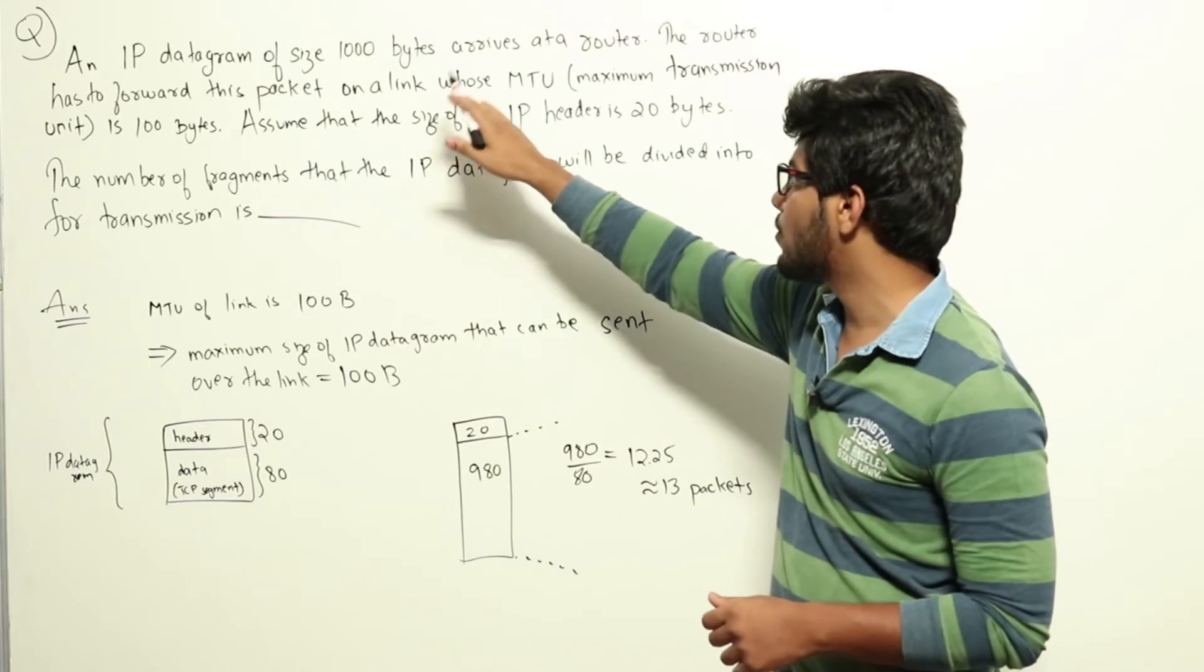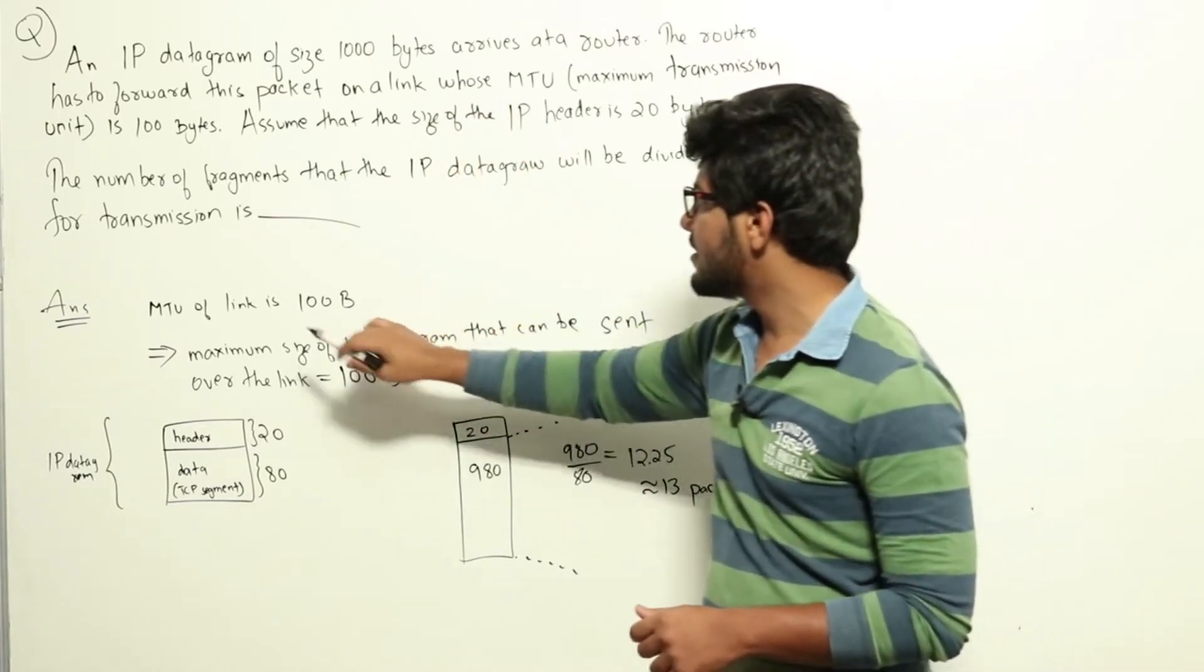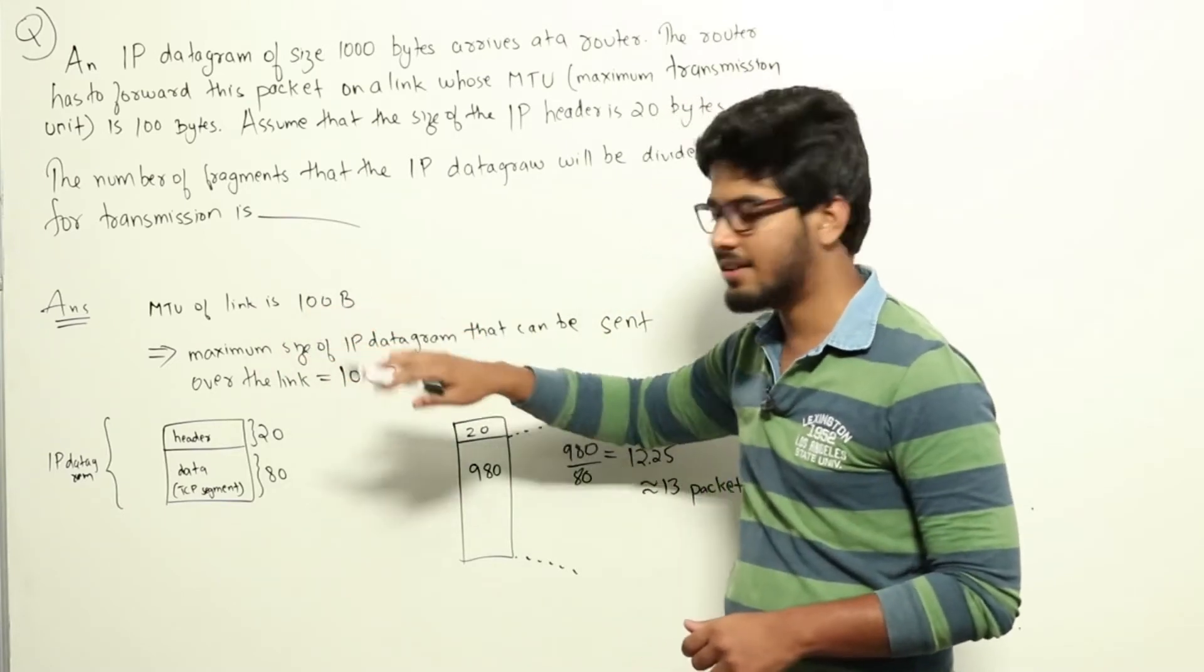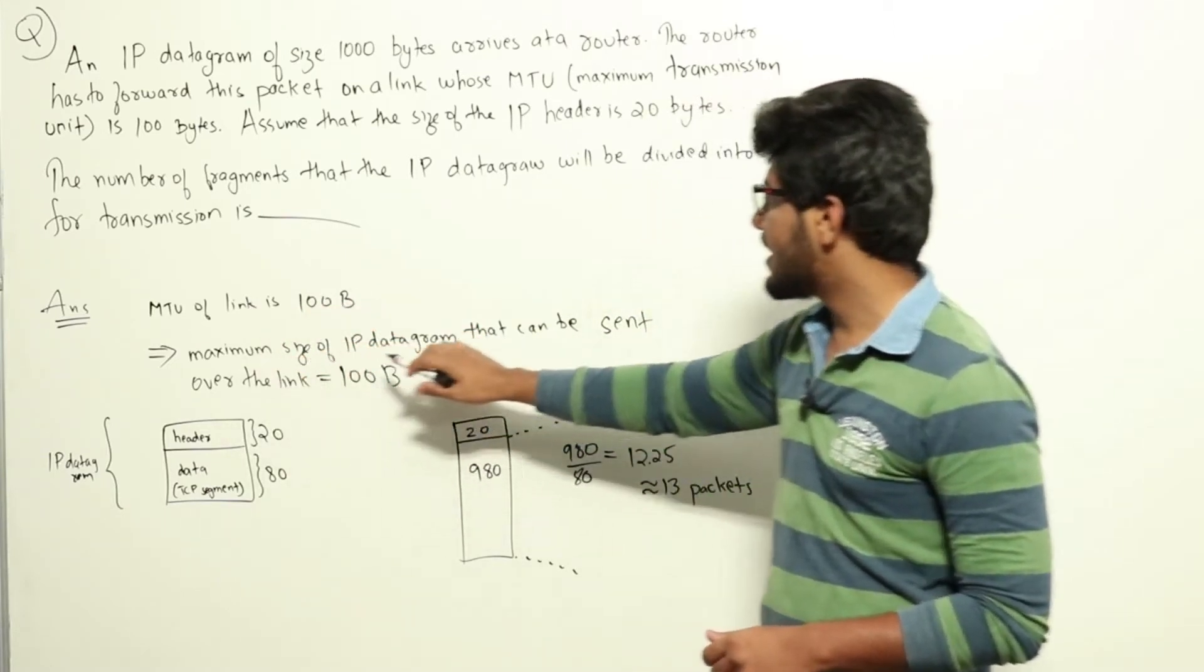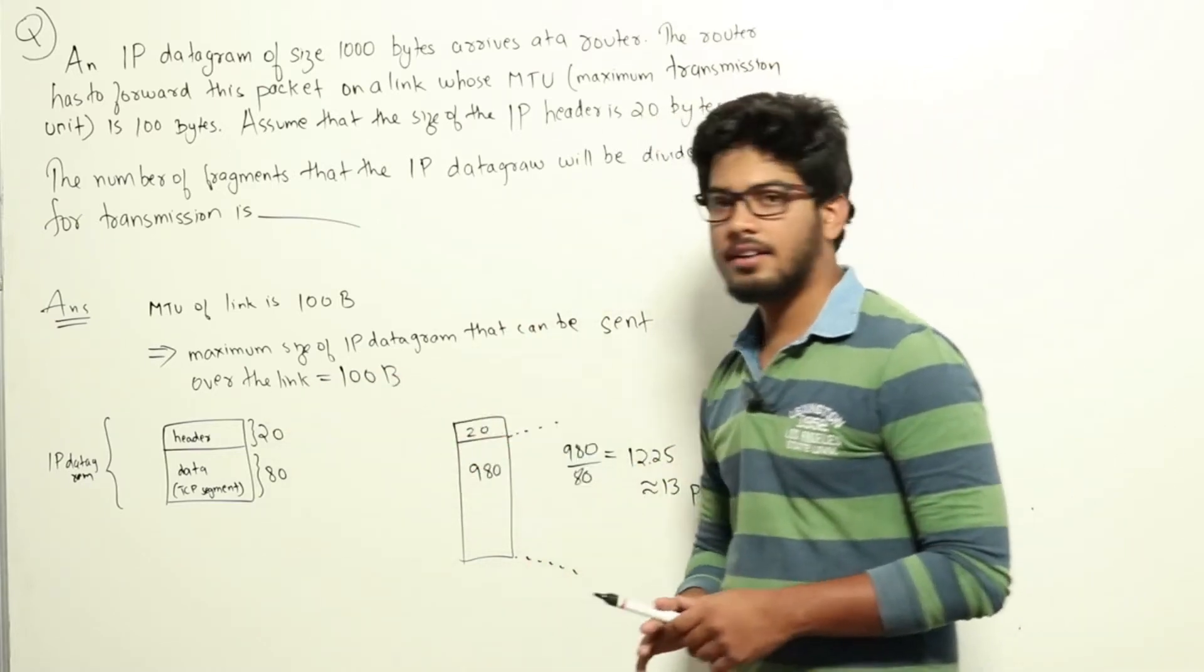Now, the router has to forward this packet over a link to some other router. But it is saying that the maximum transmission unit of the link is 100 bytes, which means that the maximum size of the IP datagram that can be sent over the link is 100 bytes.